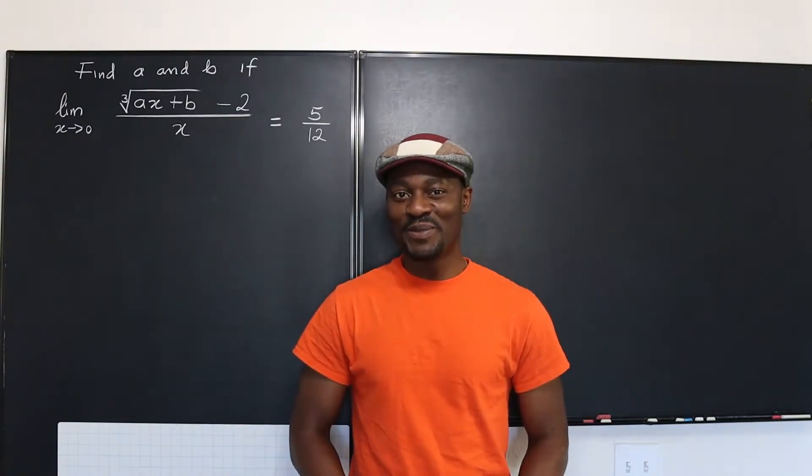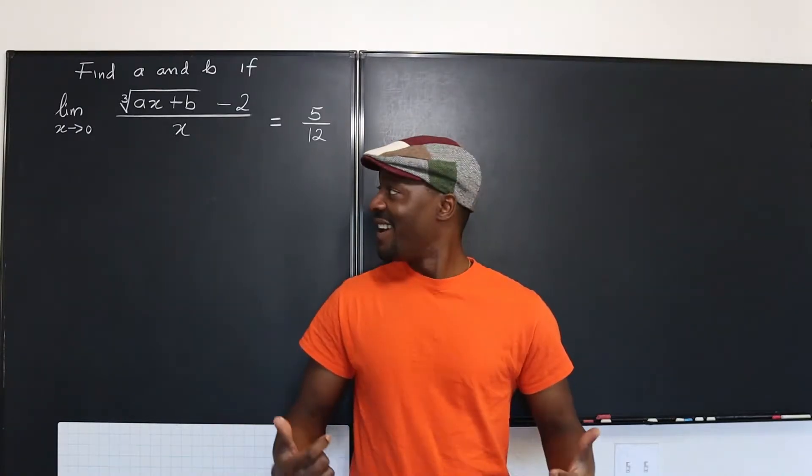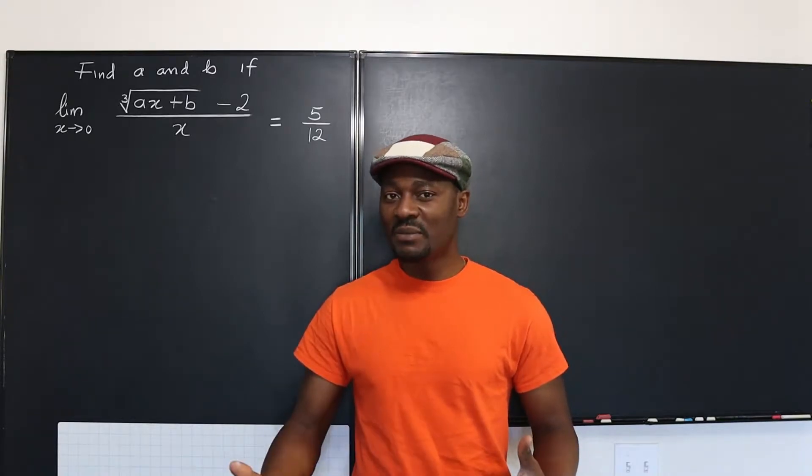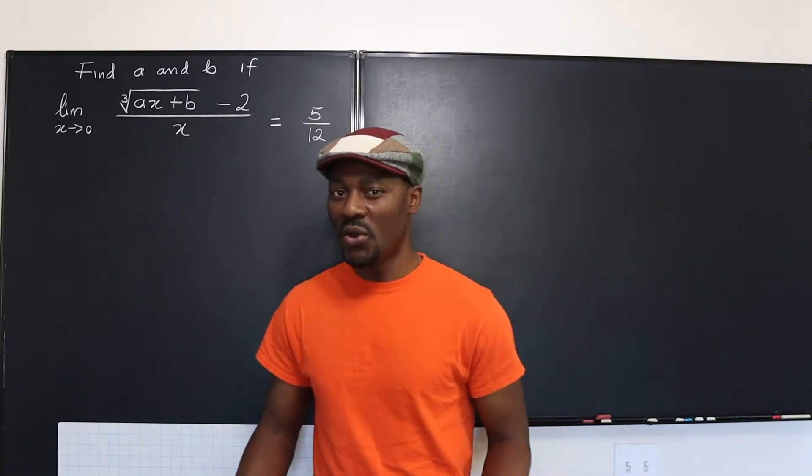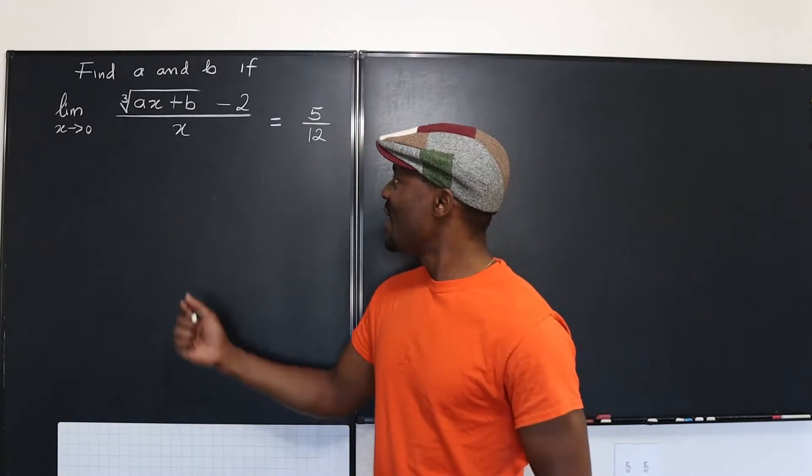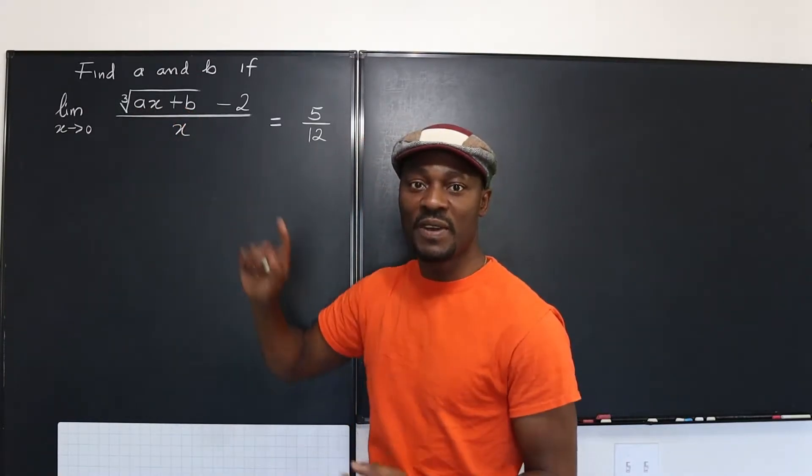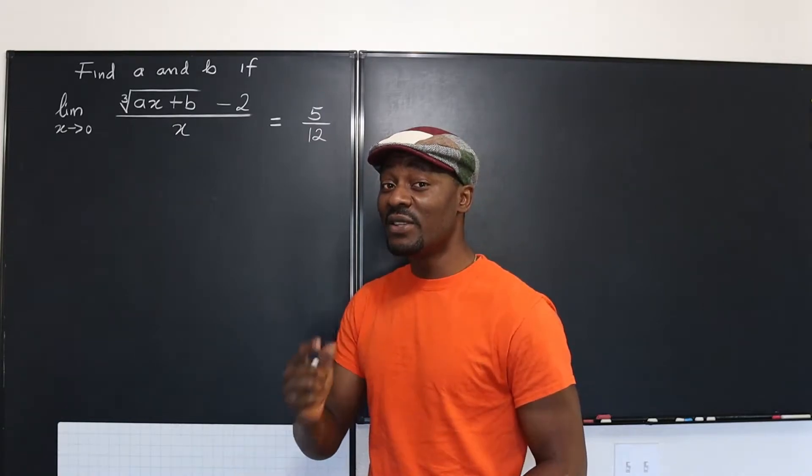Hello and welcome to another video. We have a limit problem and also it's an equation that we're supposed to solve. But the problem here is we have two unknowns. We're supposed to find A and B but we're given just one equation.